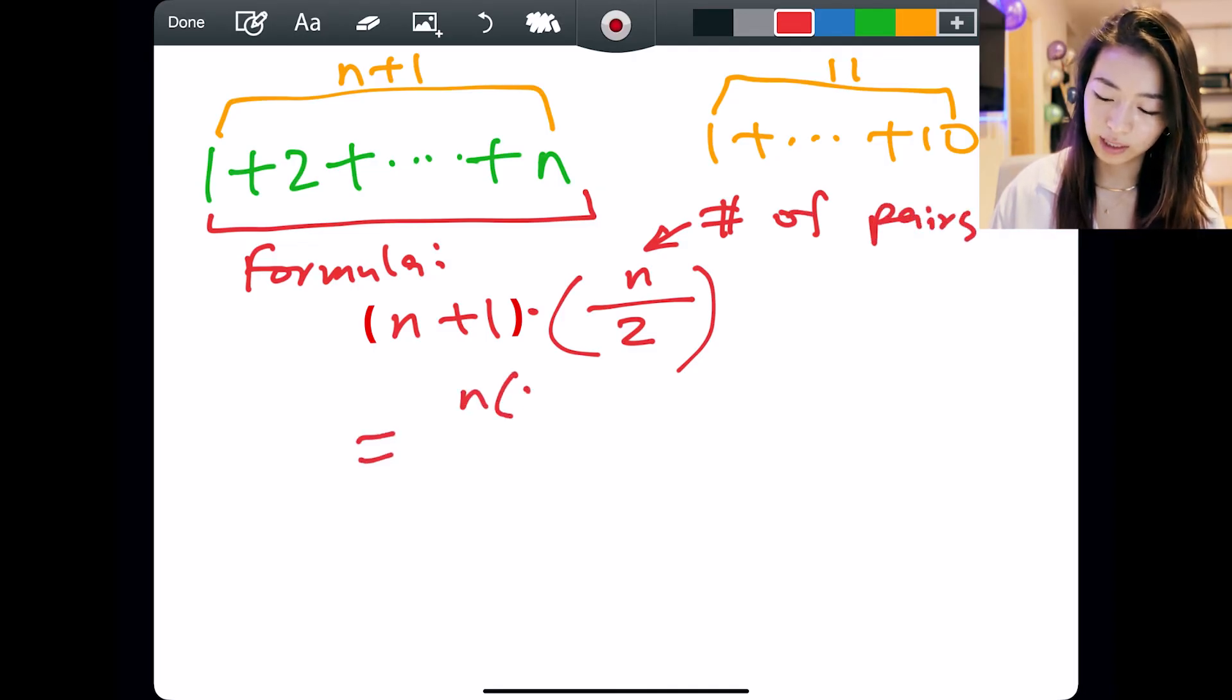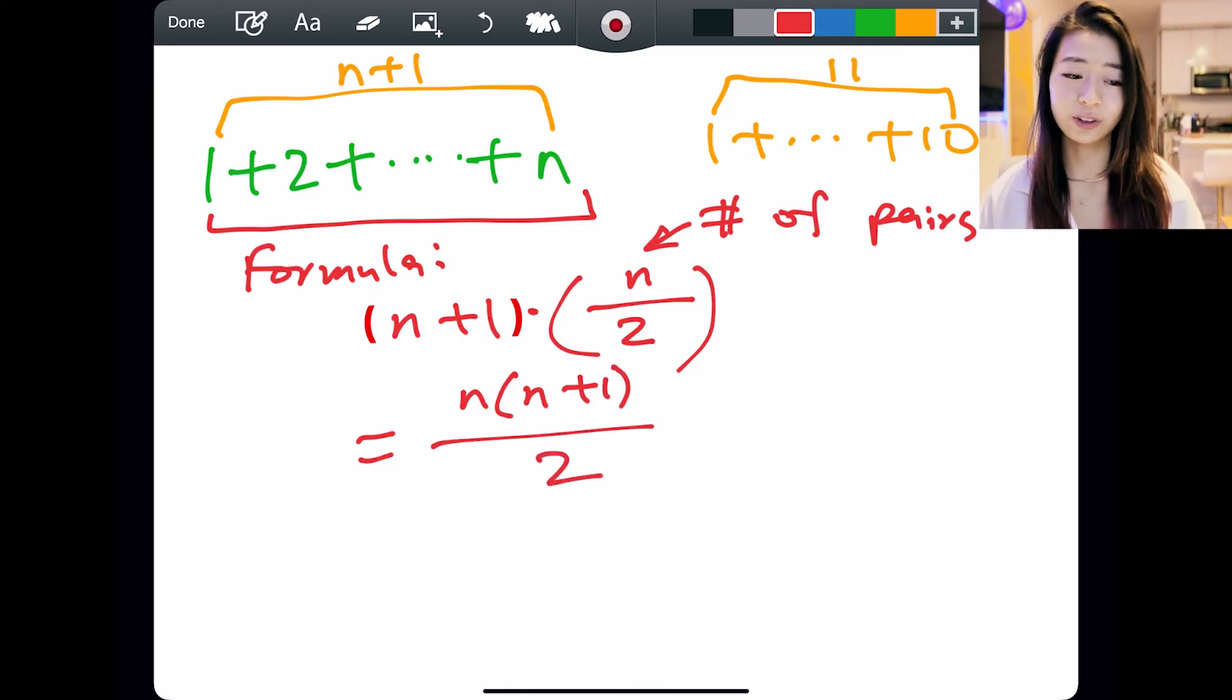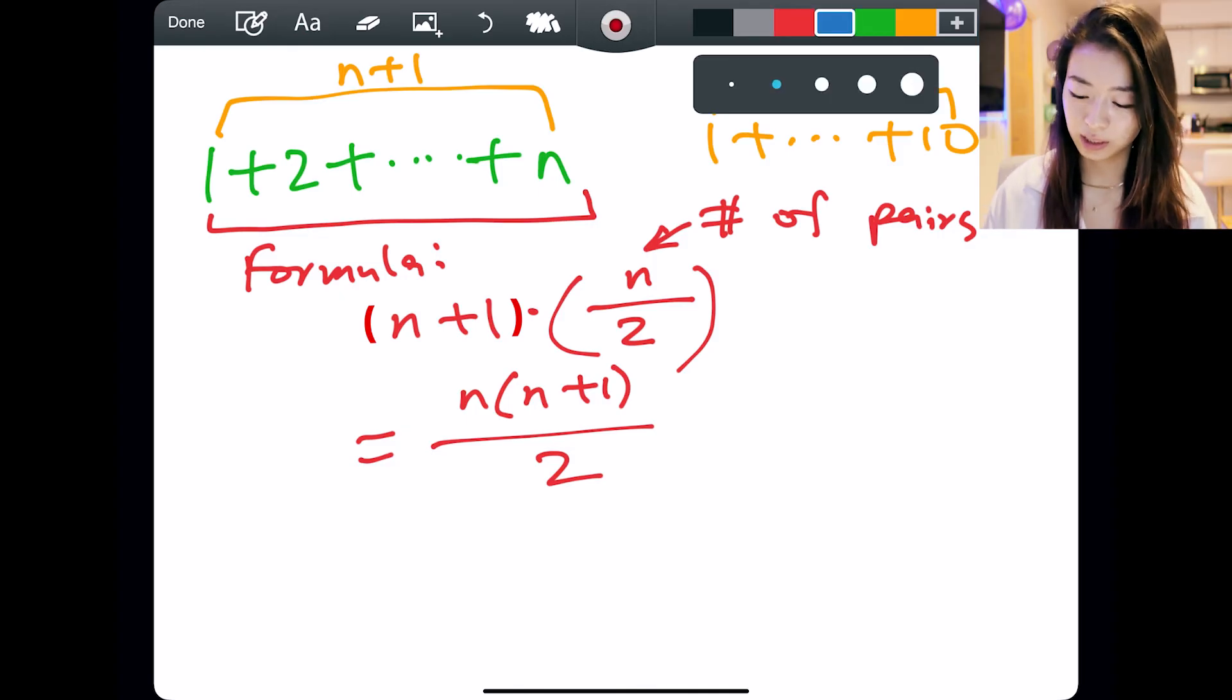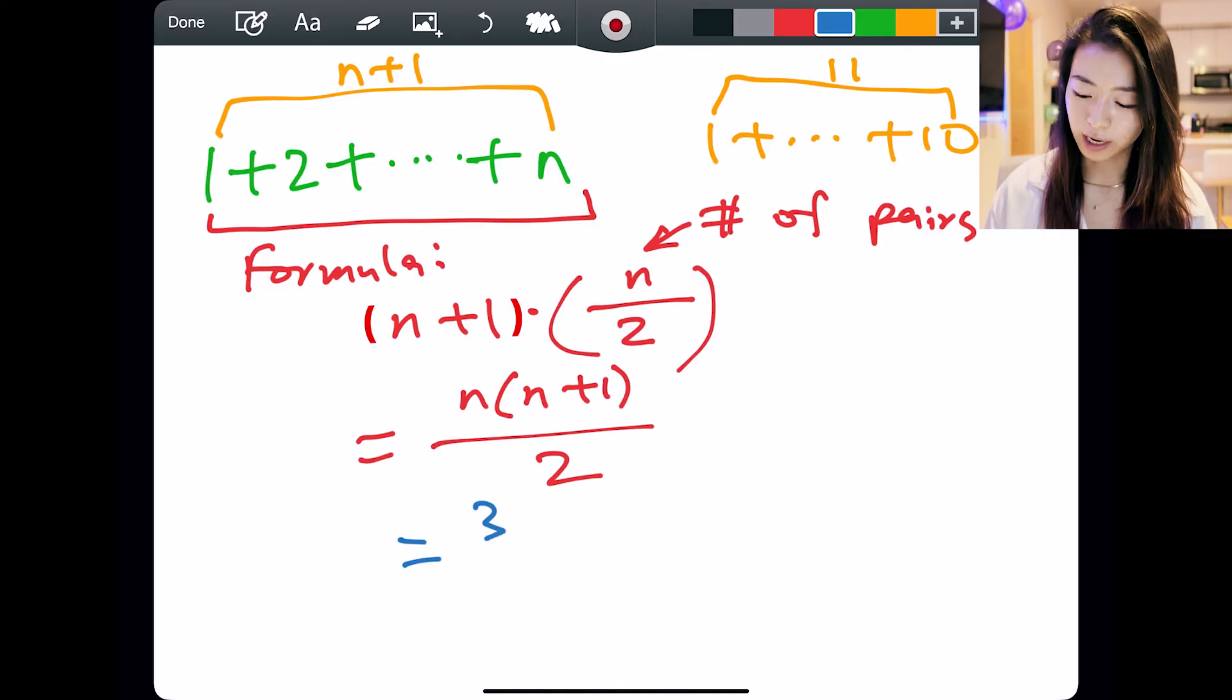Therefore, our formula is n times n plus 1 over 2. Then it's easy. For any n like here, we just plug it in. So here, our n is 36.